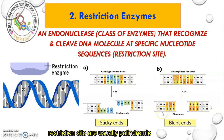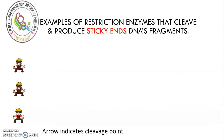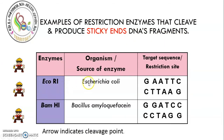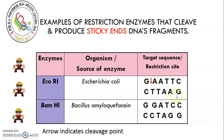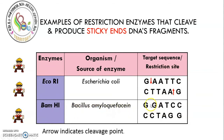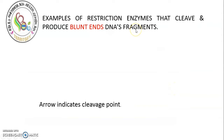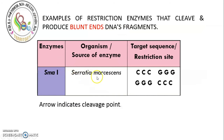Restriction sites are usually palindromic. An example of a restriction enzyme that cleaves and produces a sticky end fragment is EcoRI, which comes from Escherichia coli. It cuts between G and A on the first strand, and between G and A on the other strand. An example of a restriction enzyme that cleaves and produces a blunt end would be SmaI, which comes from Serratia marcescens, cutting between C and G on both strands.